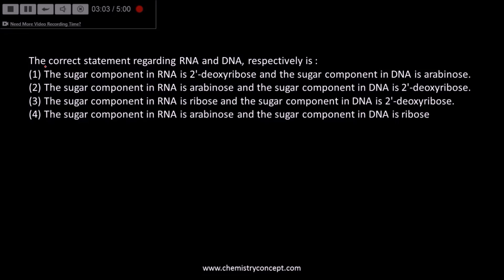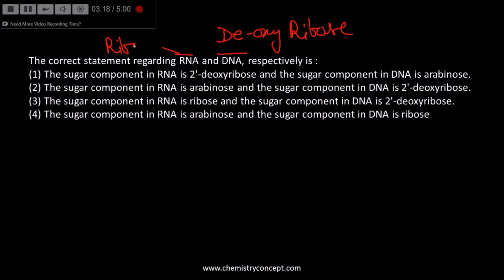The correct statement about DNA and RNA is that DNA has deoxyribose sugar while RNA has ribose sugar. The correct statement is the third one: the sugar in RNA is ribose while in DNA it is 2-deoxyribose.